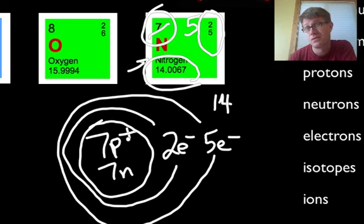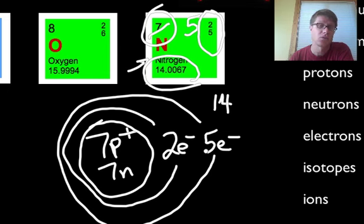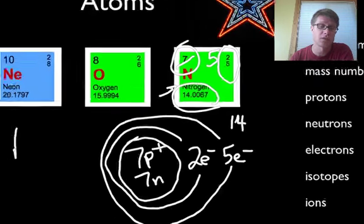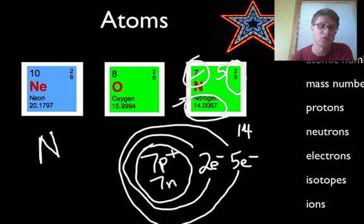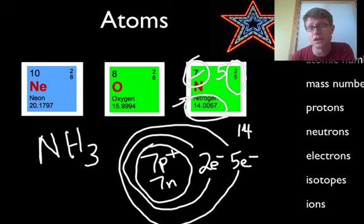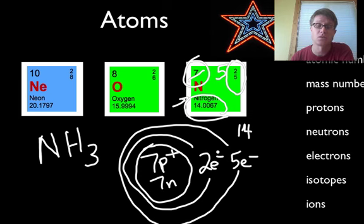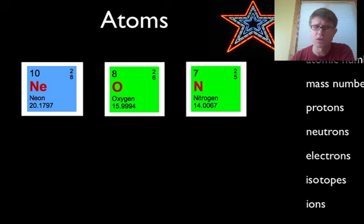So what does nitrogen want? Well nitrogen would love to have 8 electrons in this next level, and so it only has 5. If it could gain those electrons somewhere else — this is something really important. This is called ammonia, and ammonia is NH3, that's 1 nitrogen atom and 3 hydrogens. Eventually in the next few chapters we'll start talking about chemical bonds. Hydrogen can actually share 3 electrons with nitrogen to make NH3. You should be able to do that with any kind of atom on the periodic table.